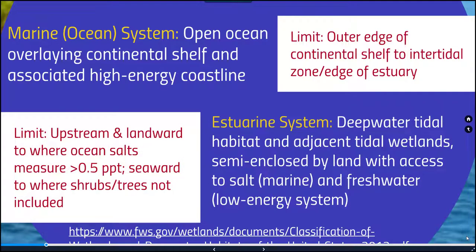The estuary system takes over from there — it's the deep water tidal habitat and adjacent tidal wetlands that is semi-enclosed by land and has access to saltwater and freshwater. These tend to be lower energy systems, and the limit of these estuarine systems are the upstream and landward areas where the ocean salts measure less than 0.5 parts per thousand. The seaward element is where shrubs and trees are not included.